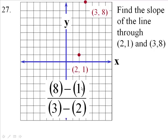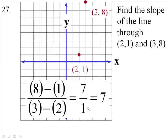So you have 8 minus 1 which is 7 and 3 minus 2 which is 1. So there's two different ways to find a slope of 7. You're going up 7 and over 1 from the graph and you can see that from the points too.